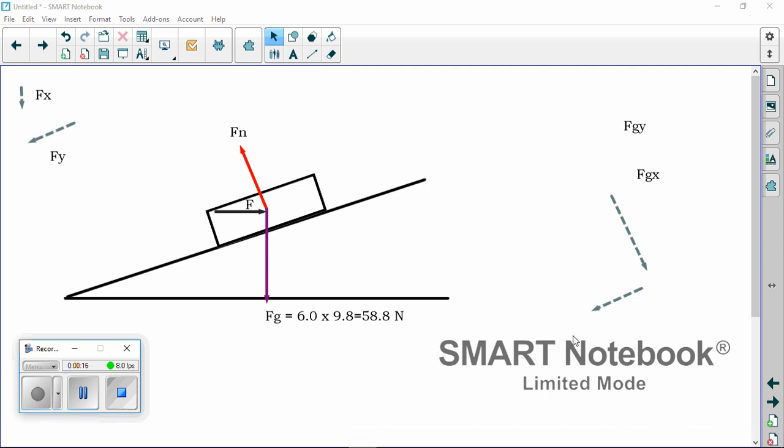Notice here that I've got the Smart Notebook Limited Edition because at home, which is where I'm at right now, I didn't bother to upgrade my software yet, so just ignore this piece down here. So the question says, a block with a mass of 6.0 kg is held in equilibrium on an incline of angle 30 degrees by a horizontal force F, as shown in the figure. Find the magnitudes of the normal force on the block and of F, and ignore friction.